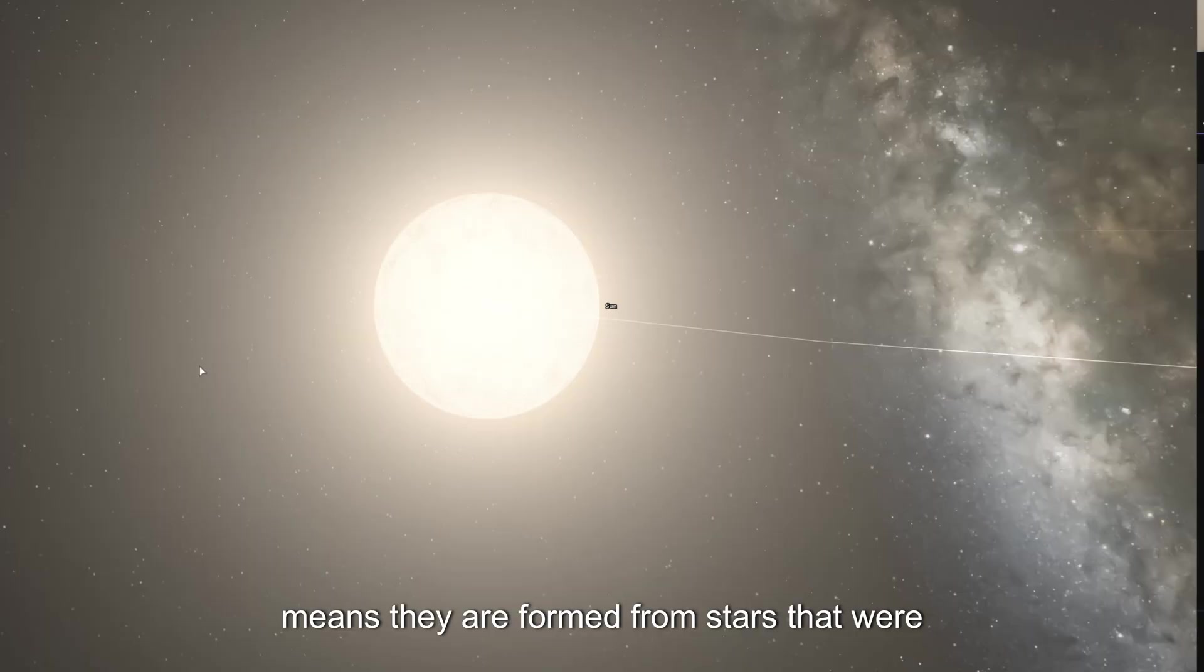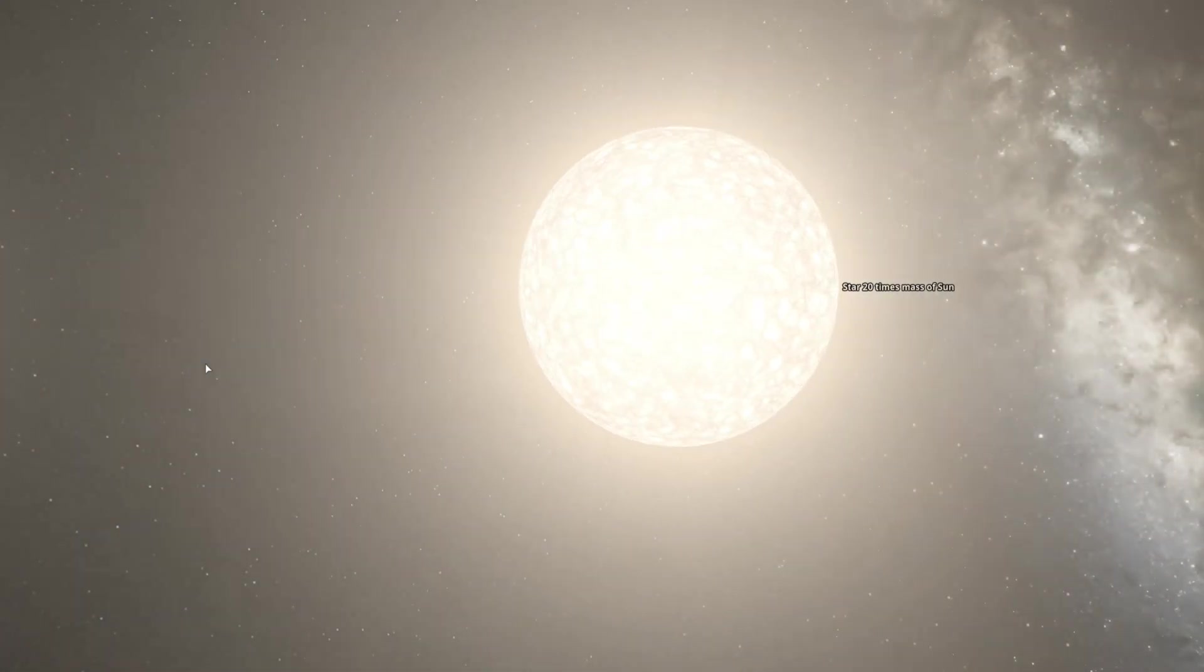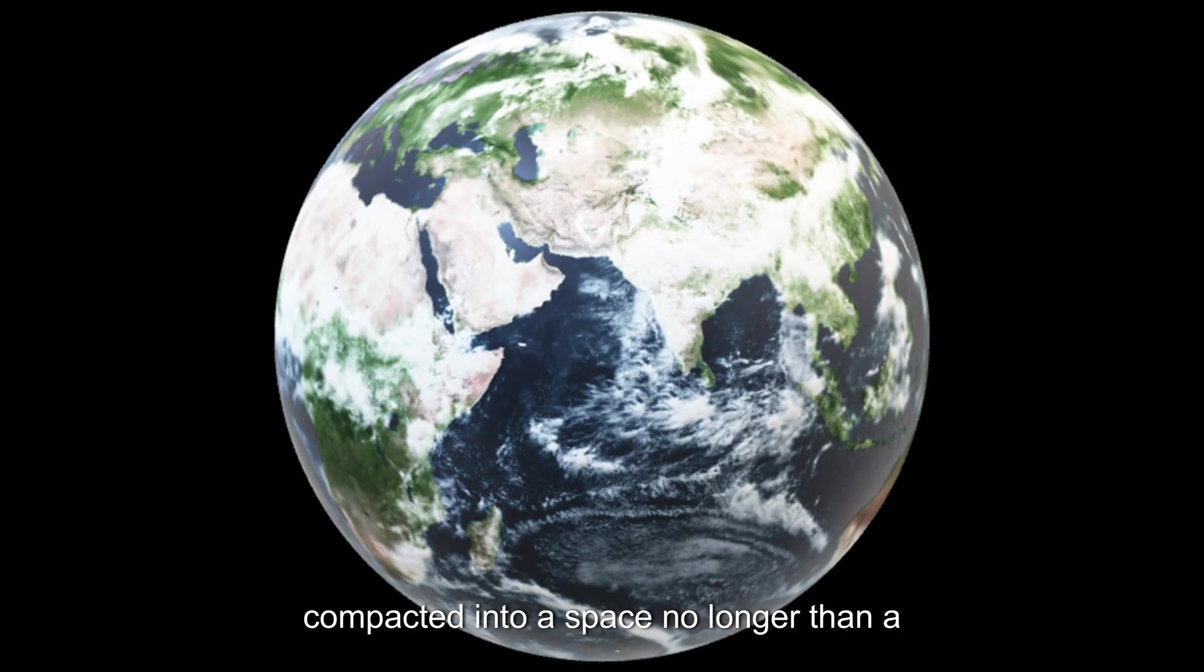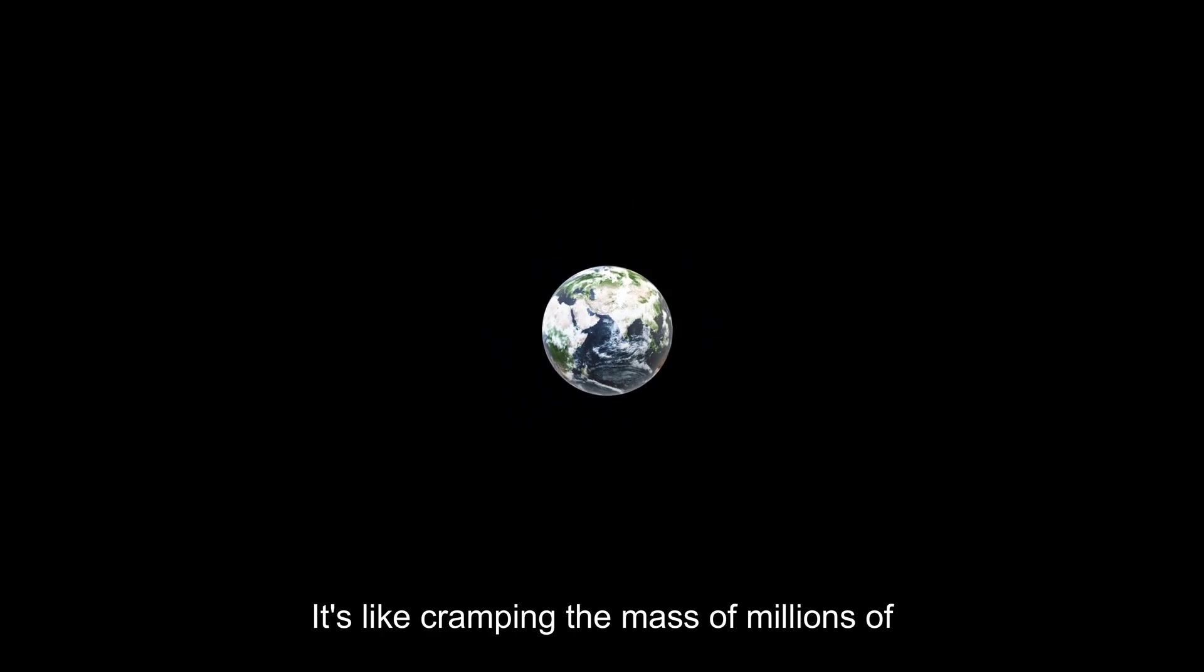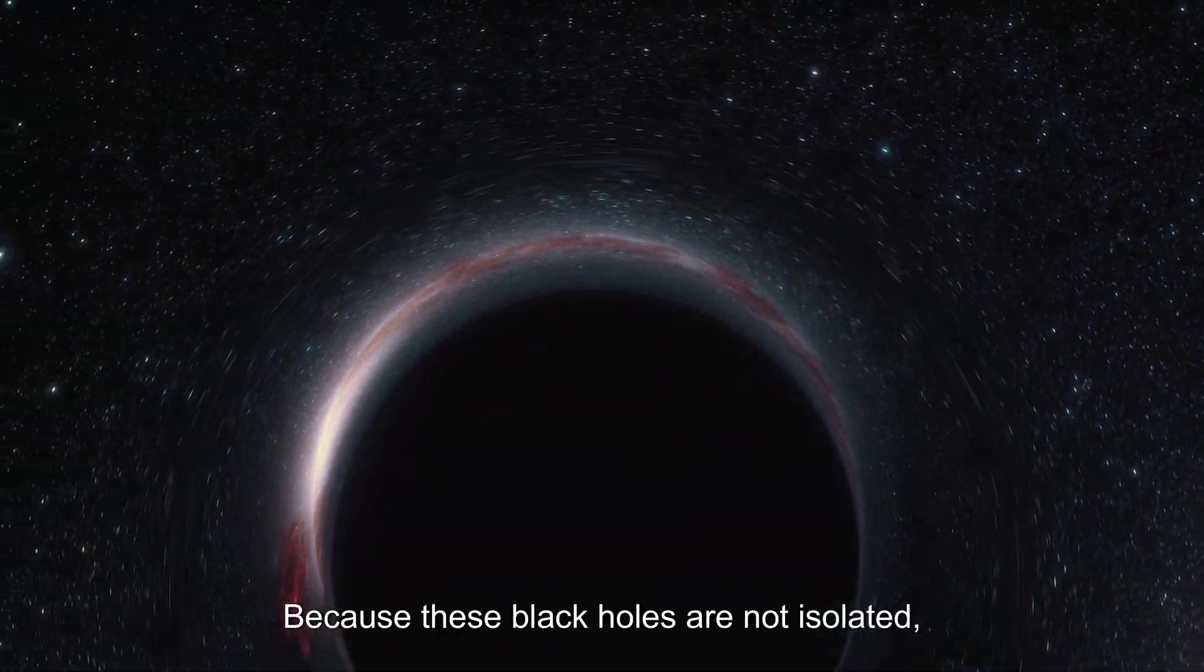These three black holes are stellar black holes, meaning they formed from stars that were at least 20 times more massive than our sun. One of them is over eight times the sun's mass, compacted into a space no larger than a small city. It's like cramming the mass of millions of Earths into a single point.